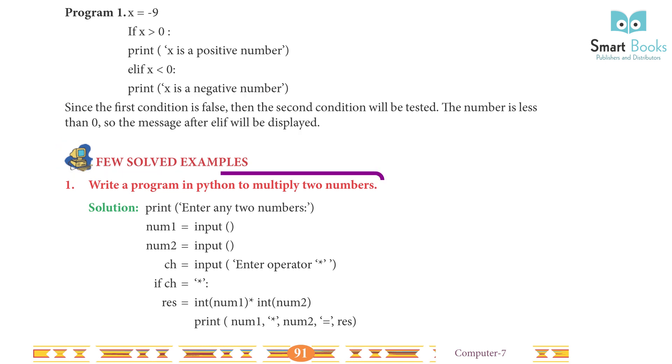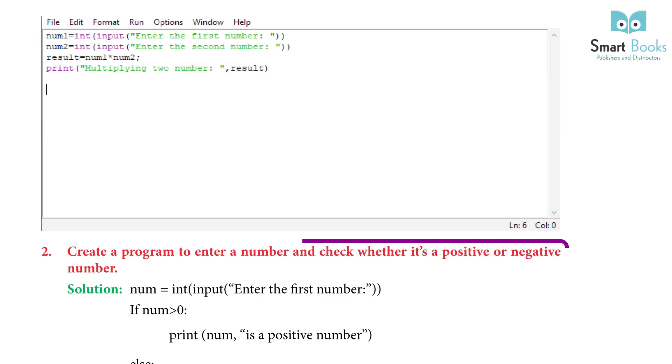Few solved examples. Example 1: Write a program in Python to multiply two numbers. Solution: print 'Enter any two numbers'. num1 = input(), num2 = input(), ch = input('Enter operator **'). If ch == '**': res = int(num1) ** int(num2). Print num1, '**', num2, '=', res.